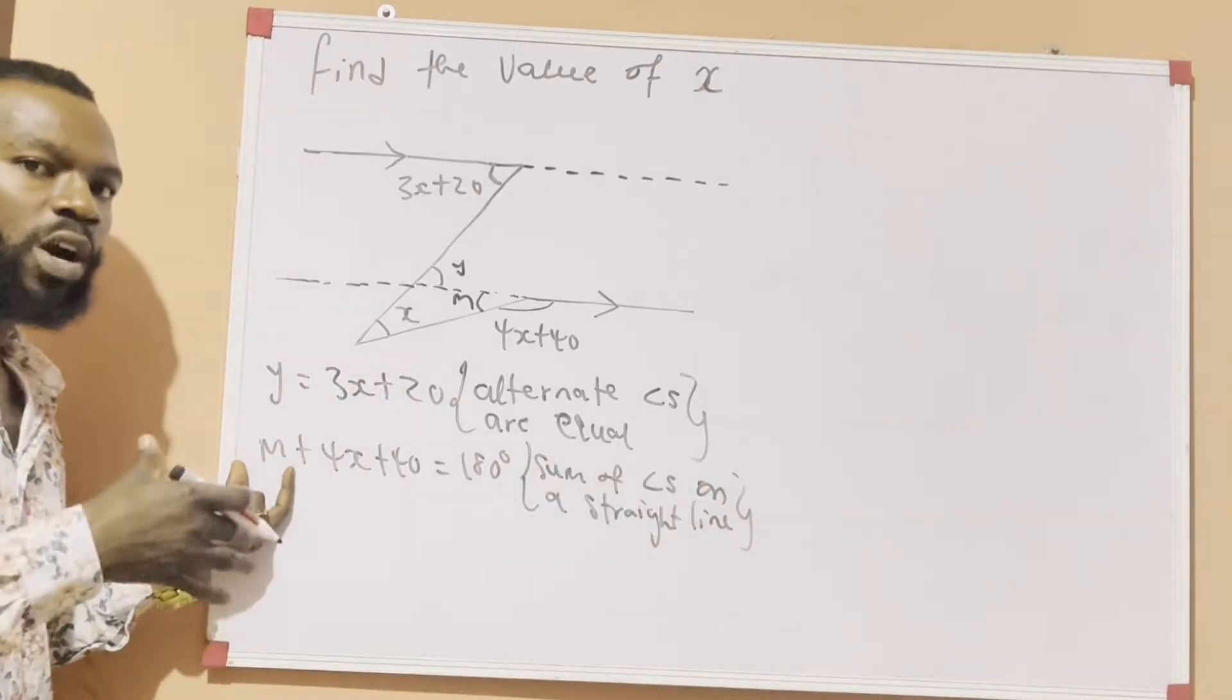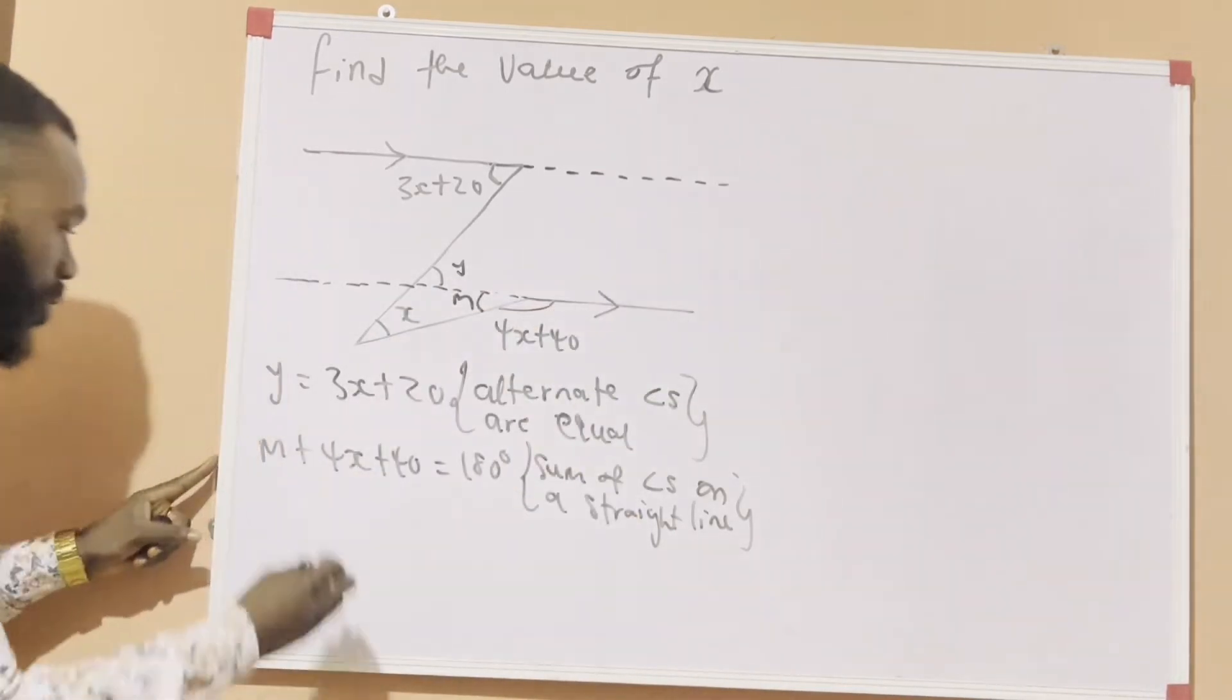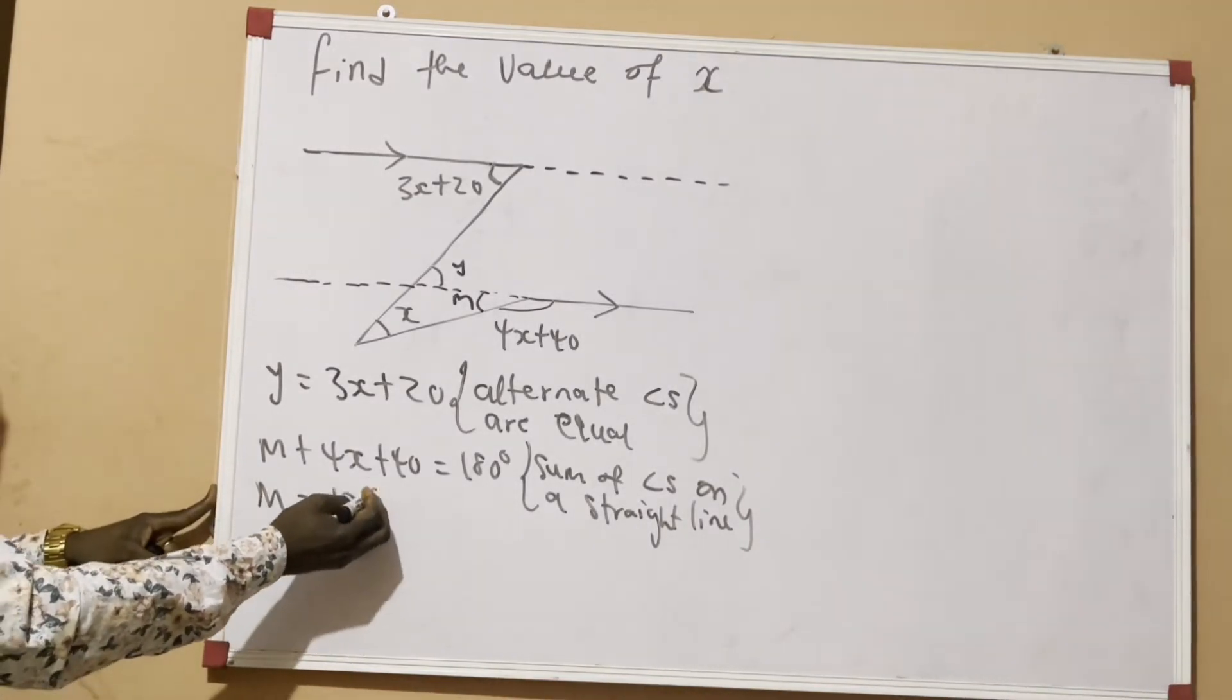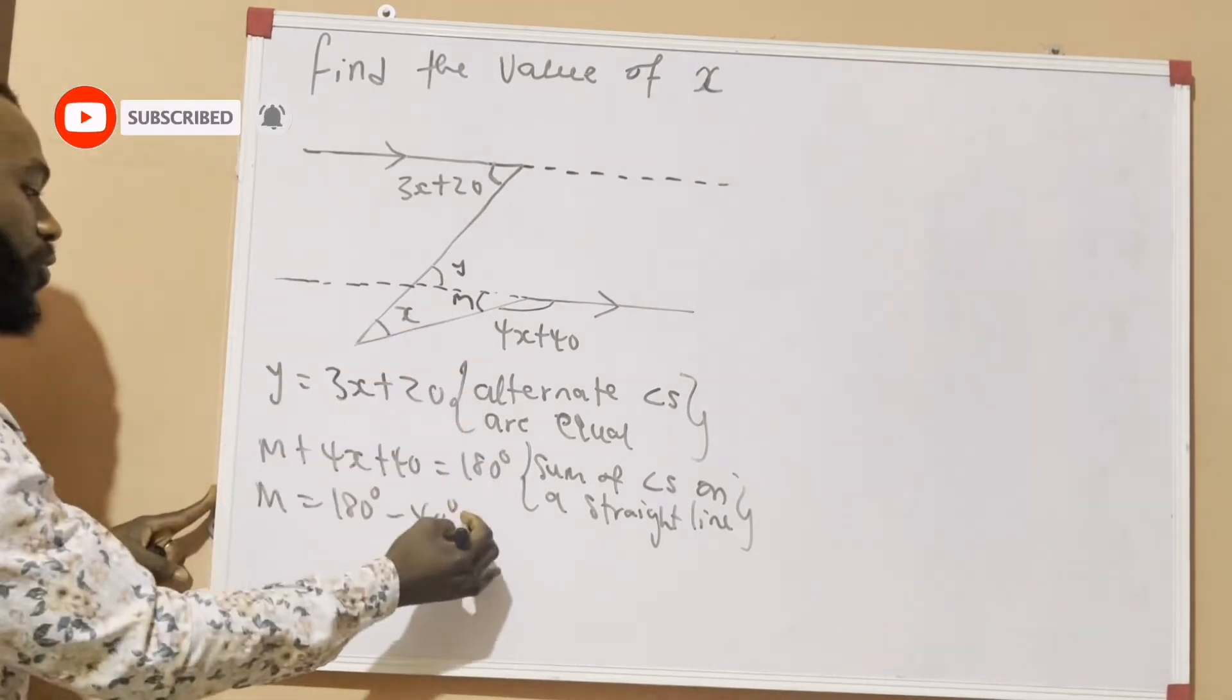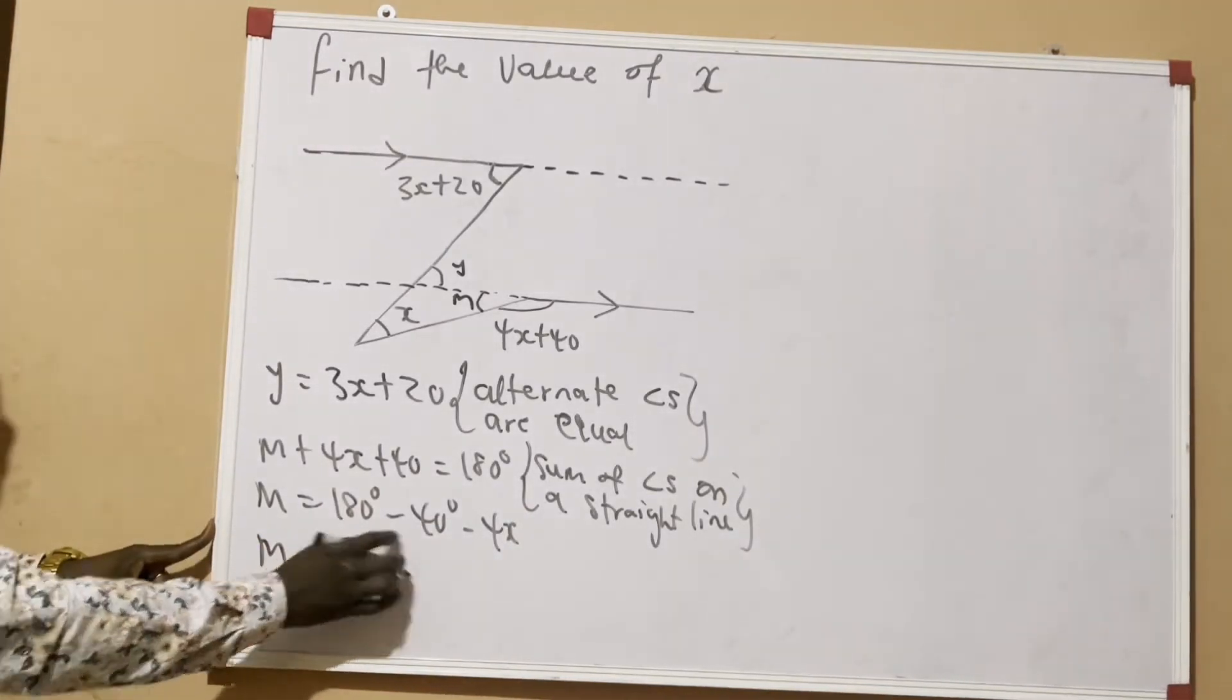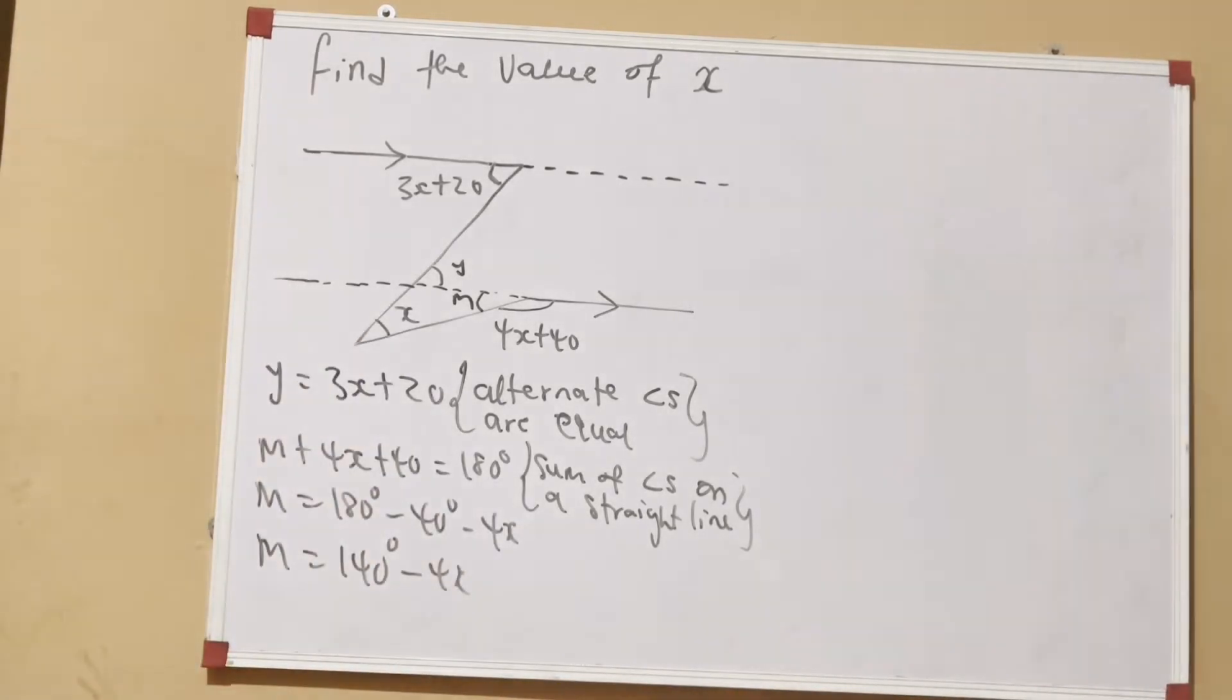Now, because we introduced n, we are going to make n the subject of the formula. For us to do that, 40 and 4x has to go to the right-hand side of the equation. So it will be n is equal to 180 degrees. If plus 40 crosses, it becomes minus 40. And if plus 4x crosses, it becomes minus 4x. So n is equal to 180 minus 40 gives us 140 degrees minus 4x.